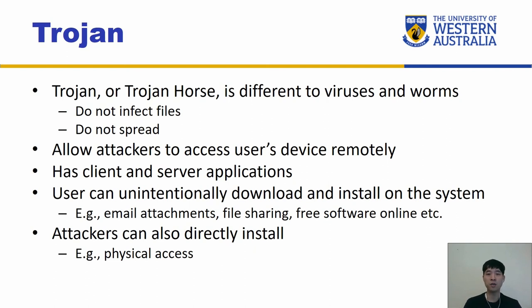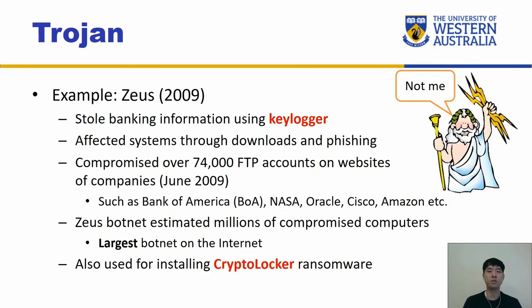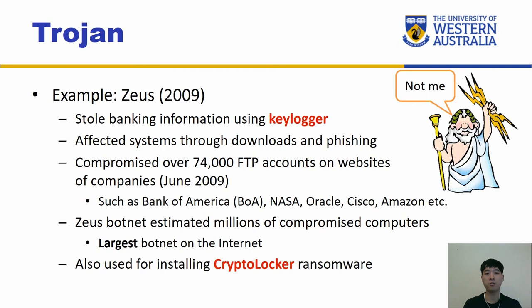Attackers can also directly install Trojans via physical access — for example, plugging in a USB. Zeus, back in 2009, basically stole banking information using a keylogger carried on the Trojan, and affected systems through downloads and phishing. You can see how different attack techniques get combined to exploit people and systems. It compromised over 74,000 FTP accounts on websites such as Bank of America, NASA, Oracle, Cisco, and Amazon. Even big organizations are not necessarily protected against something newly released.